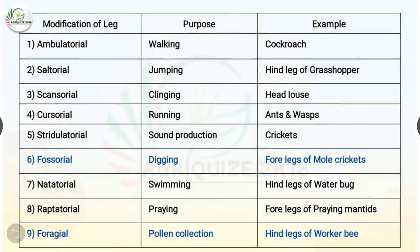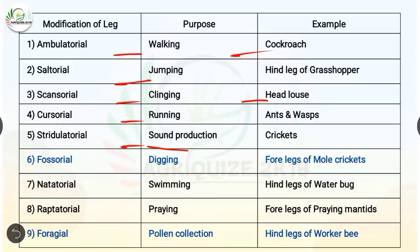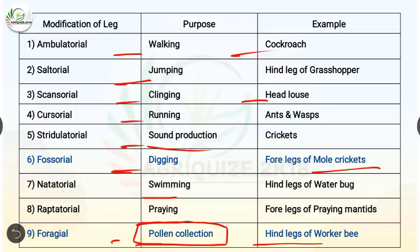Let's know more about the modifications of legs. Ambulatory modification: purpose is walking, example is cockroach. Saltatorial modification: purpose is jumping, example is hind leg of grasshopper. Scansorial modification: purpose is clinging, example is head louse. Cursorial modification: purpose is running, examples are ants and wasps. Stridulatory modification: purpose is sound production, example is crickets. Fossorial modification: purpose is digging, example is fore legs of mole crickets. Natatorial modification: purpose is swimming, example is hind legs of water bug. Raptatorial modification: purpose is preying, example is fore legs of praying mantis. Corbicular modification: purpose is pollen collection, example is hind legs of worker bee.